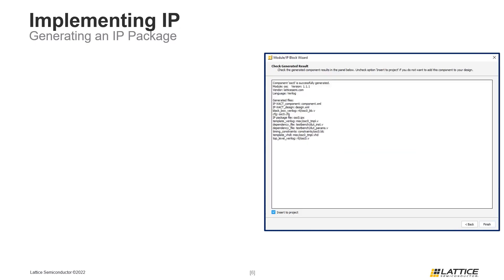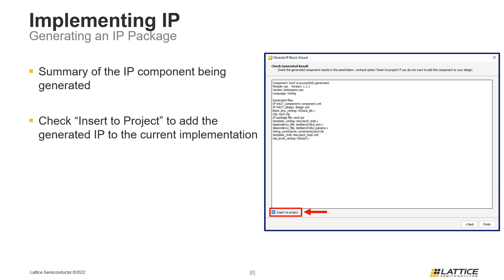The final page in the component generation window is called Check Generated Result. This page contains a summary of the selections that were made to generate the current IP component. It is important that the Insert to Project checkbox at the bottom of the page is enabled. If this option is not enabled, the IP component will not be available for use in the current Radiant project. Once users have reviewed the information and are satisfied with their component selections, they should click Finish to generate the IP component.